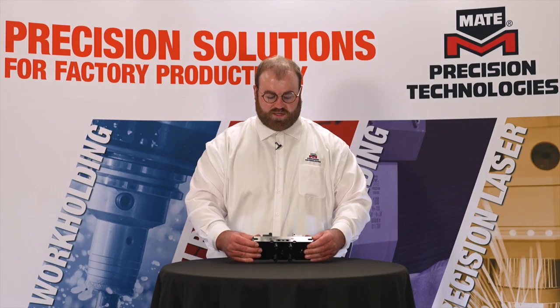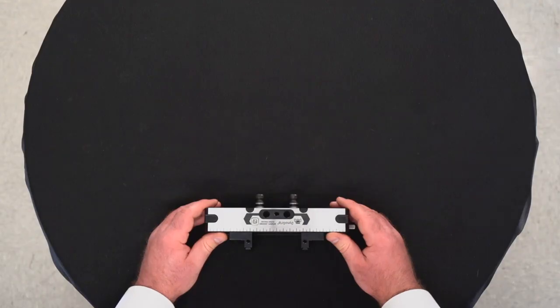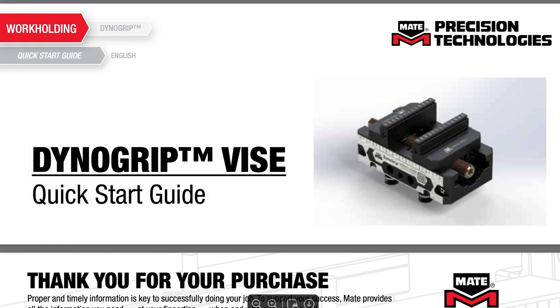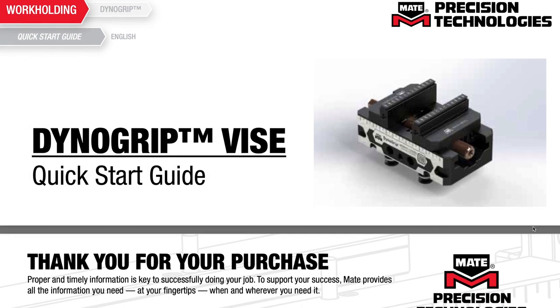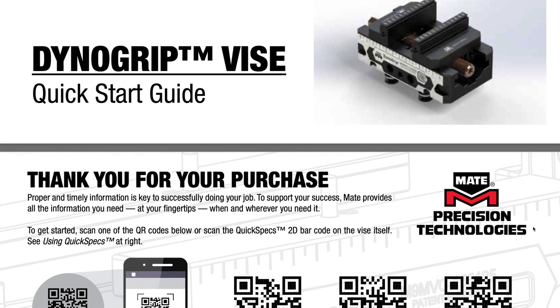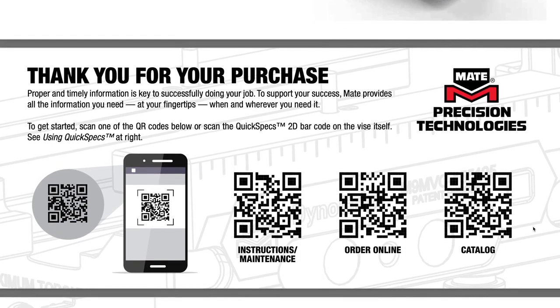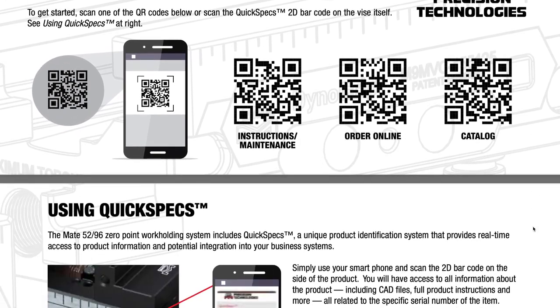All Mate vices also feature a QR code for our quick specs which allows you to easily find product literature and data as well as 3D models and instructions to simplify use and ensure that the operators using the vices can quickly locate the important data at any time.